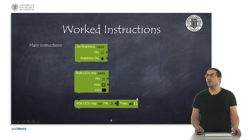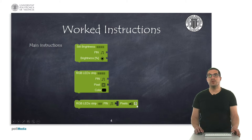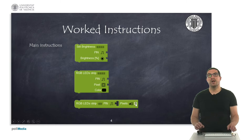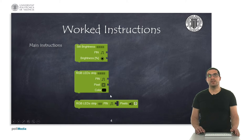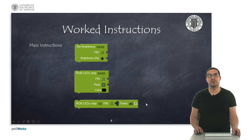In this instruction here, you specify the pin where the whole strip is connected to, and here you specify the number of pixels that your strip has. It will modify the instruction, as you will see later, and it will appear a set of color fields depending on the number you put here. Then you can select individually the colors for all LEDs together with just one single instruction.